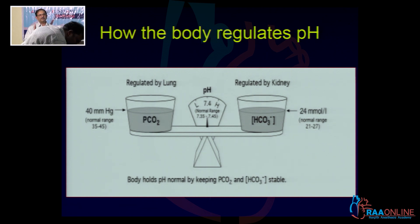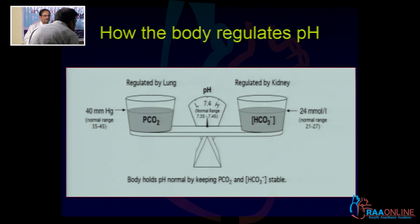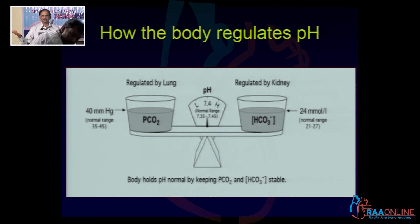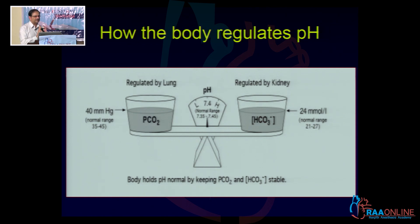The pH is held constant at about 7.4. You've got a respiratory component which is taken care of by ventilation, by the lungs, and the metabolic component which is taken care of by the kidneys, and these two processes try to regulate the pH in the range of 7.4.